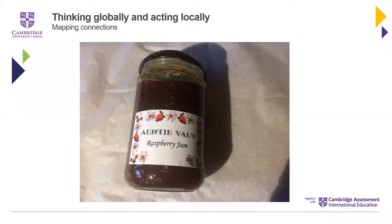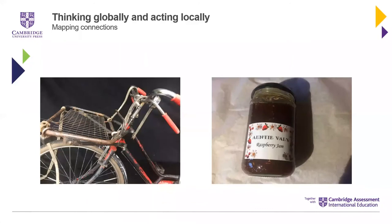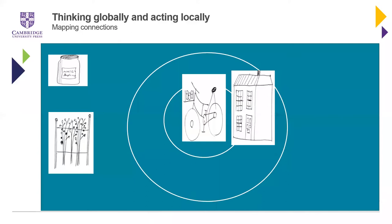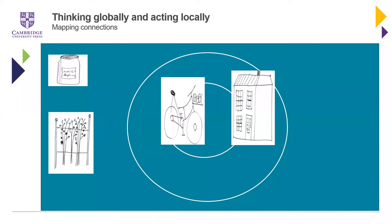My first two objects are a delivery bike and a jar of jam, chosen because of their connections at a local scale. The jam was made by my friend Val from fruit she grows, and she sells it to raise money for a local healthcare charity. Around once a month, I cycle to her house about a mile from mine with empty jars in a crate on the front and some cash, and I return with full jars and sell the jam to my neighbours.